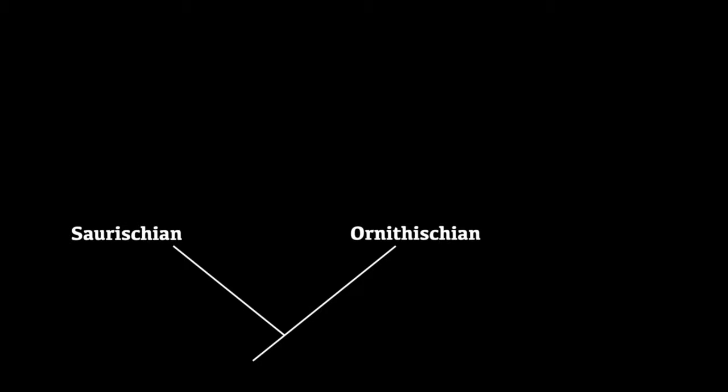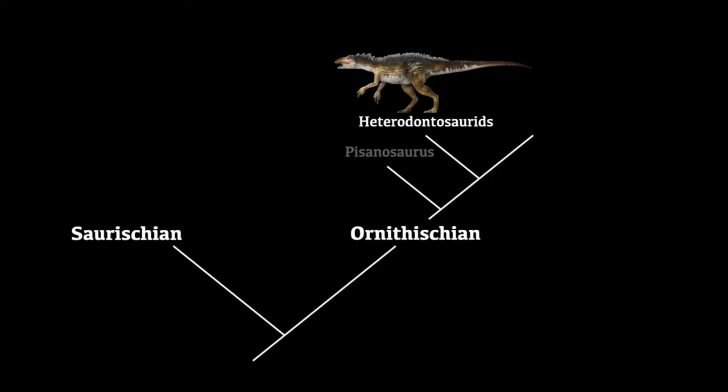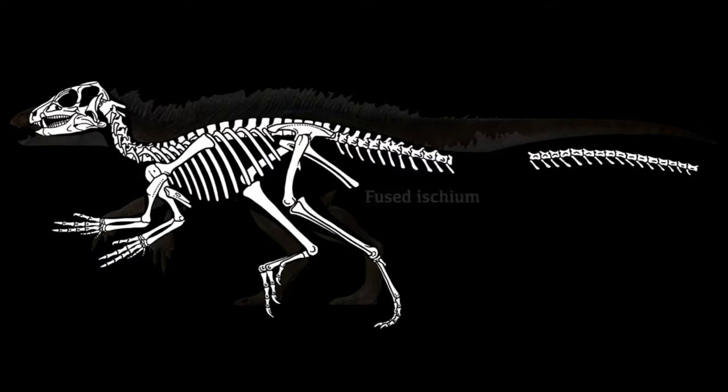The ornithischians were the most widespread and diverse group in the whole Mesozoic era. One of the earliest examples is Pisanosaurus, known only from a few fragments, but providing a glimpse of what the earliest ornithischians may have looked like: small, two-legged bipedal herbivores. The first major group were the heterodontosaurids, defined by a fused ischium and pubis, a palpebral — a small bone projection inside the skull — and a pre-dentary, a beak-like end of the lower jaw. Examples include Heterodontosaurus and Tianyulong, one of the Chinese dinosaurs with evidence of quills.